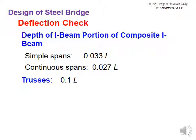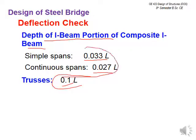For beam deflection checks: the depth of the I-beam portion of a composite I-beam should be at least 0.033L for simple spans and 0.027L for continuous spans. For trusses, the depth should be at least 0.1L. These values apply for deflection checks for beams, girders, and trusses respectively.